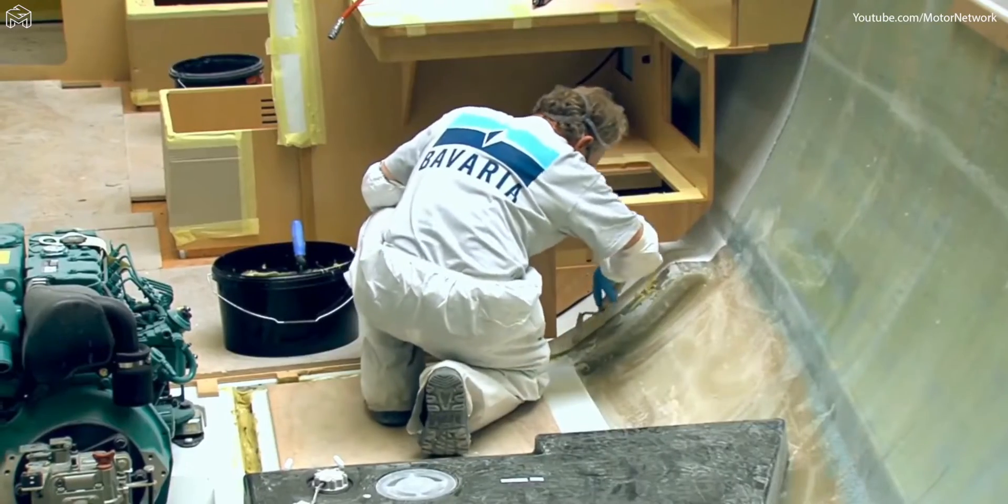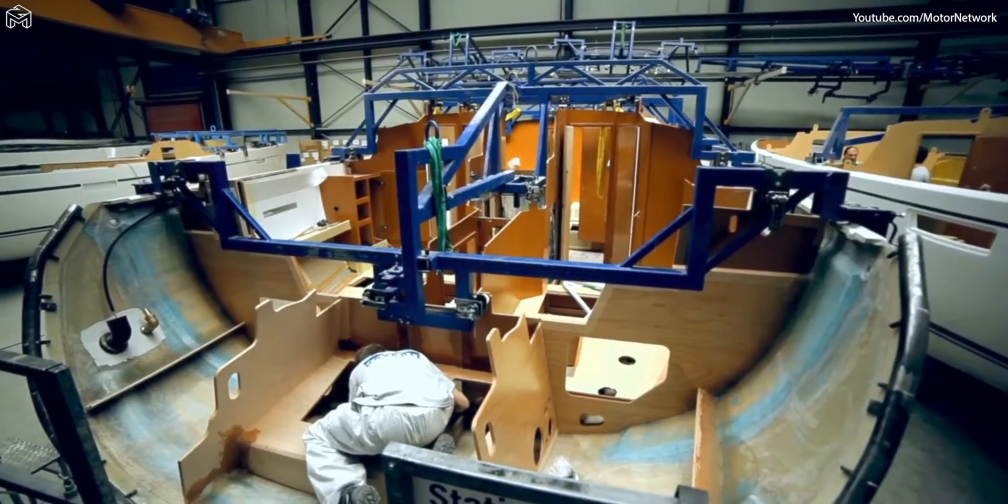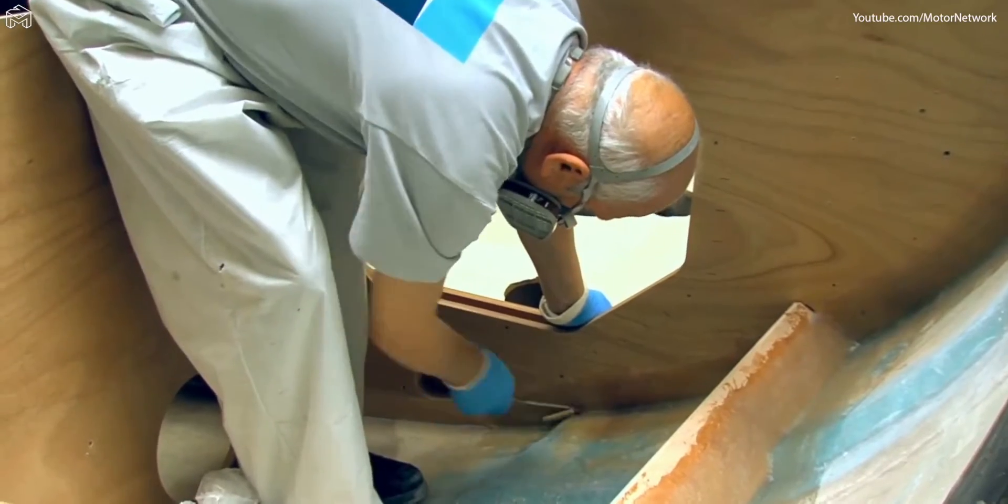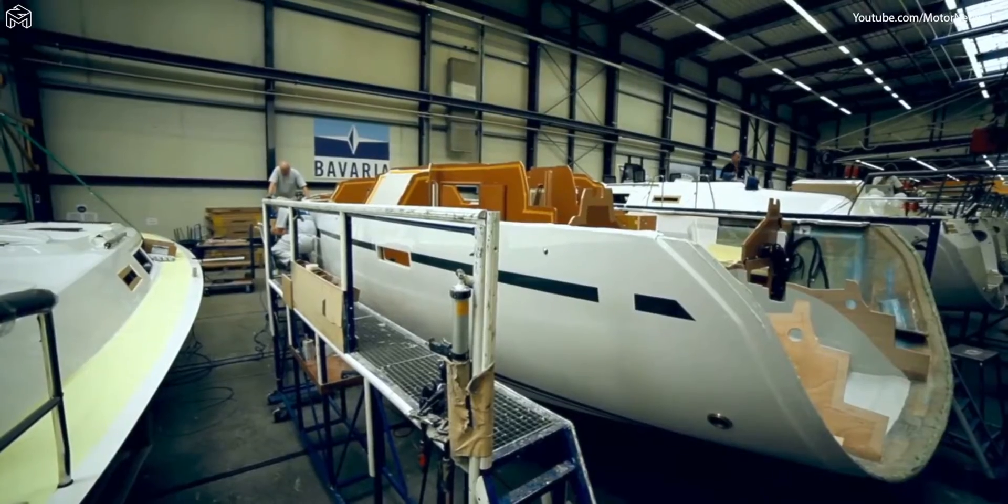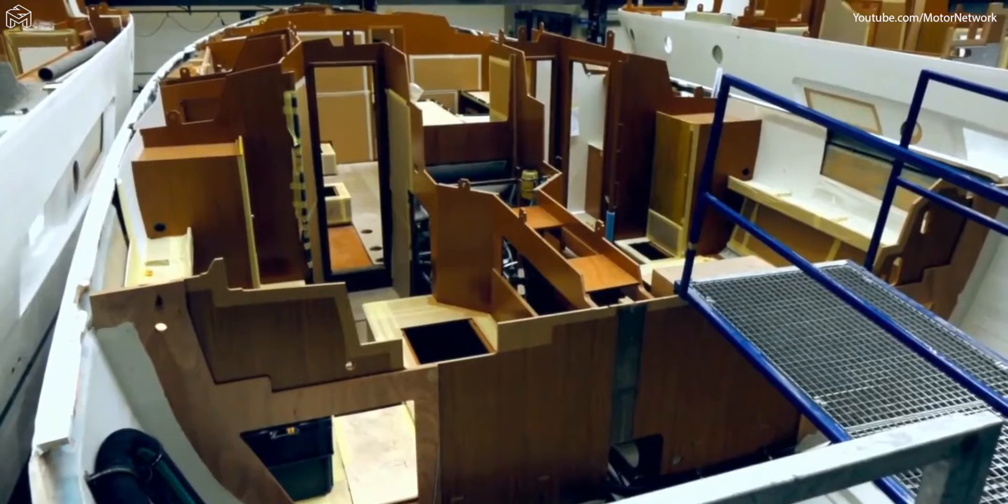Here at Bavaria, all of the bulkheads are laminated to the hull, with the solid main bulkhead providing additional rigidity. It even has a thickness of 30 millimeters in yachts more than 45 feet long. This ensures that the hull and deck together have an extremely high level of additional stability later on.